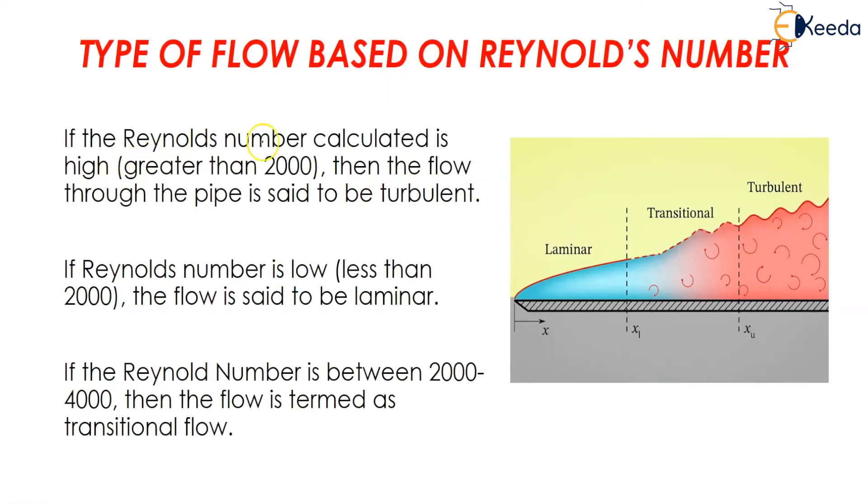Type of flow based on Reynolds number. If the Reynolds number calculated is high that is greater than 2000 then the flow through the pipe is said to be turbulent.